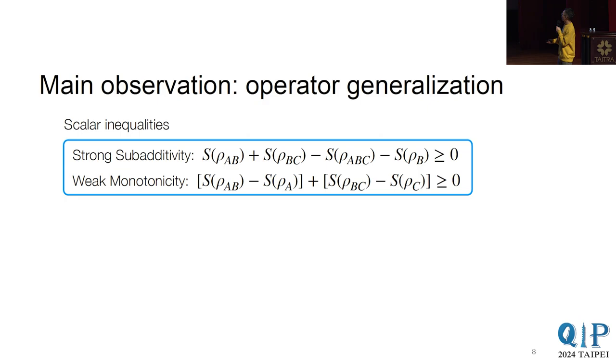And in fact, it's equivalent to strong subadditivity. So if you consider pure state, we know that for pure state, the entropy of a region is the same as its complement. So SAB is equal to SCD. SAB is equal to SD. So you can pretty much just rearrange the term, and you can see that the two inequalities are the same.